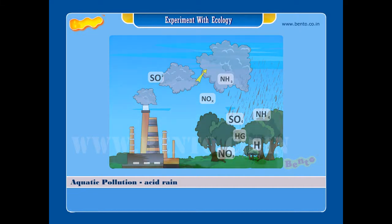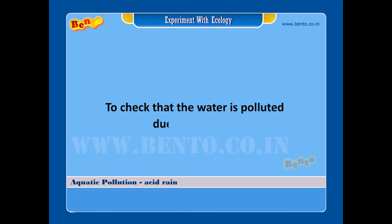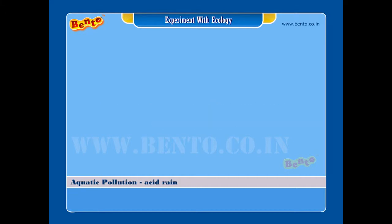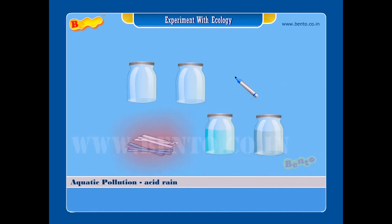Experiment. Aim: to check that water is polluted due to acid rain. Materials required: two small jars with lids, a pen or marker, two different water samples, and strips of litmus paper.